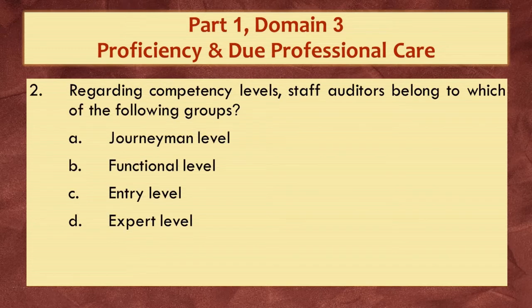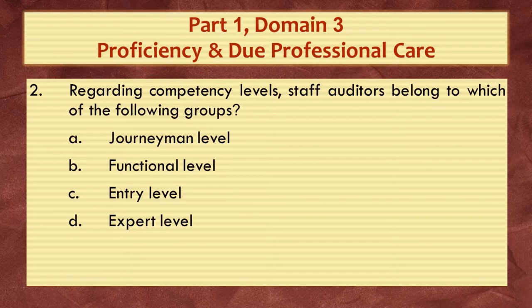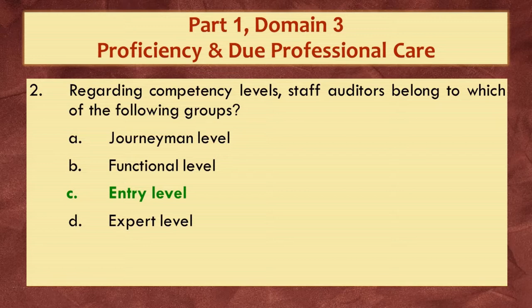Practice question two: Regarding competency levels, staff auditors belong to which of the following groups? Staff auditors have a low level of competency since they have little work experience in internal auditing and little training. Therefore, staff auditors belong to the entry level. The answer is C. Remember, journeyman level is typically your in-charge and senior auditors, functional level includes audit supervisors and directors with a high level of competency, and expert level includes subject matter experts.